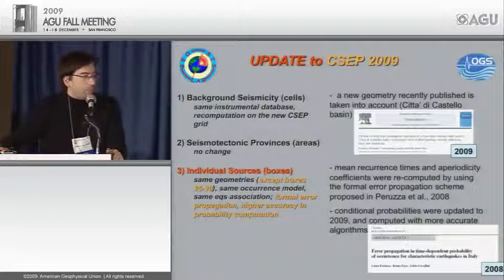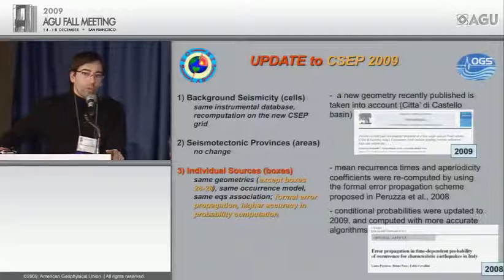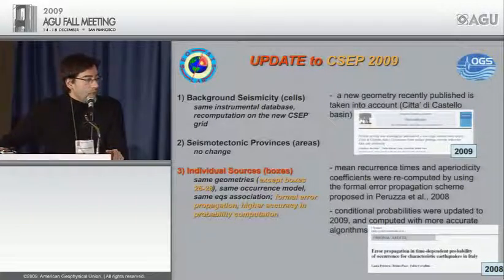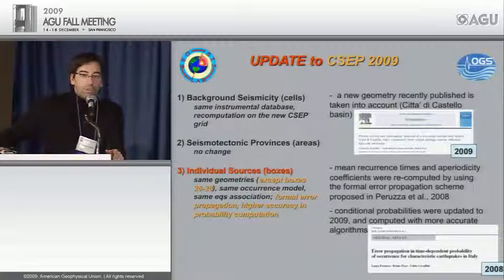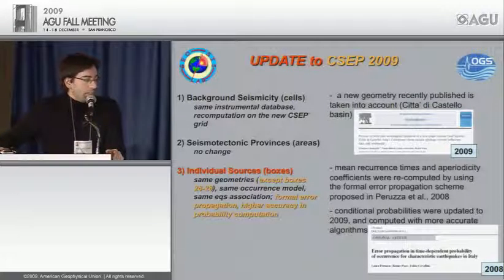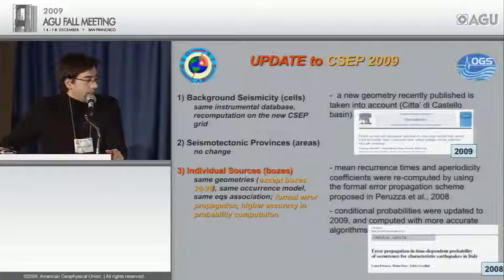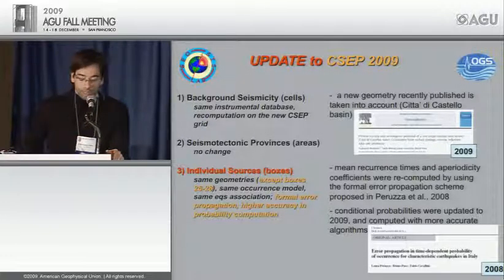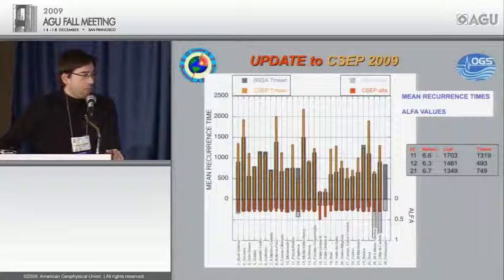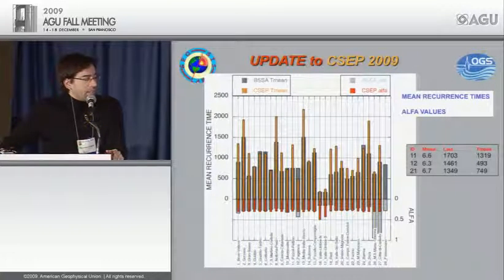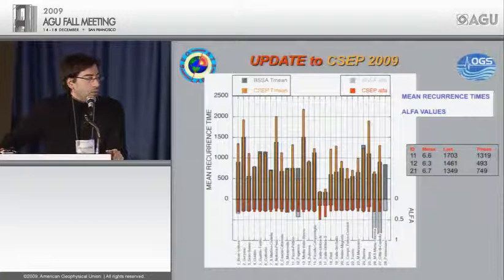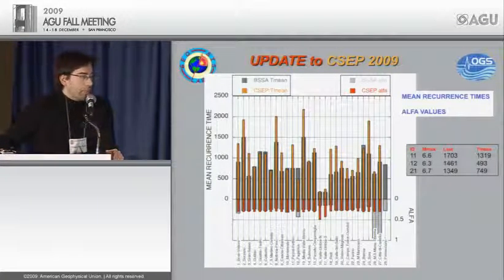For the 2009 update, background seismicity and seismotectonic province boundaries received no major changes except a new grid for the B value computation. For individual sources we used the same geometries and occurrence models, but applied new formal error propagation from a recent paper by Peruzza et al. 2008 to achieve higher accuracy in probability computation. We compare mean recurrence time and alpha values between the 2006 publication and the new March 2009 values.